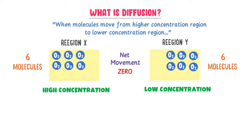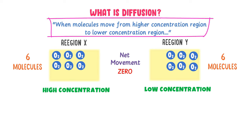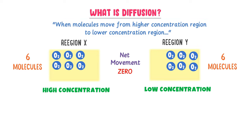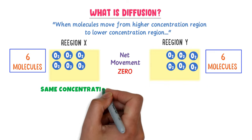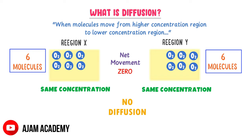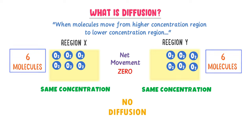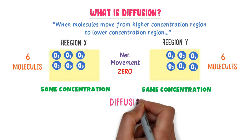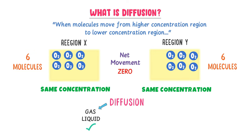When molecules move from a high concentration region to a lower concentration region, this process is called diffusion. Now, since both regions have the same number of oxygen molecules and the same concentration, there is no more diffusion. Same concentration between two regions means no diffusion. Also remember that diffusion only occurs in gases and liquids — no diffusion occurs in solids.